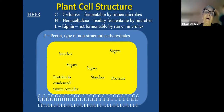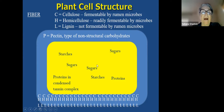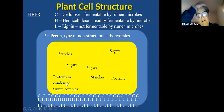Inside the cell wall you have starches and sugars — your non-structural carbohydrates — which yield primarily propionic acid. Inside the cell you also have proteins, and some proteins are bonded into condensed tannin complexes if the plant contains condensed tannins.